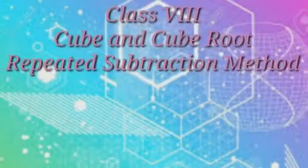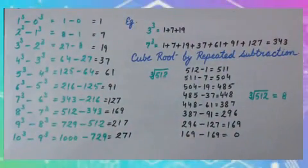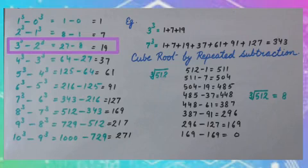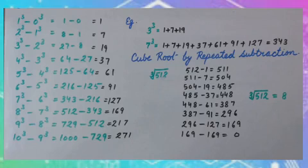Good morning students. Let's see some patterns to find out cube root. If we find 1 cube minus 0 cube, it is 1. 2 cube minus 1 cube is 7. 3 cube minus 2 cube is 19, and so on. What are we finding here? Yes, we are finding the difference of 2 consecutive cubes.